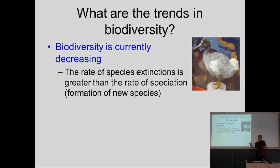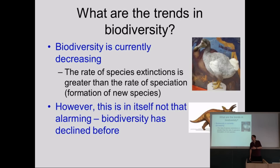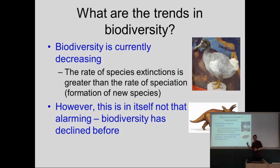So we know what biodiversity is and broadly where it is — and it's currently decreasing. The rate of species extinction is greater than the rate of speciation, so the formation of new species. In nature, species are always going extinct and new species are always being formed — that has always been going on and will always continue. There's nothing inherently wrong with things going extinct. But what's alarming about the current situation is the rate.